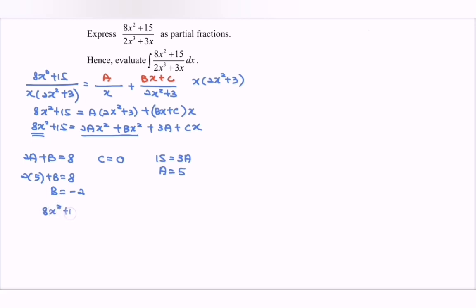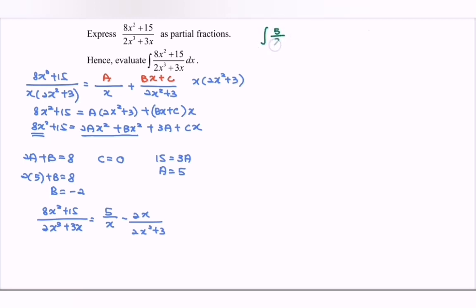So we rewrite the original expression. 8x² plus 15 over 2x³ plus 3x equals 5 over x, minus 2x over 2x² plus 3. Note that c equals 0, so there is no constant term in the numerator of the second fraction.